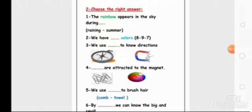Number three: we use what to know directions? A compass. Make a circle on compass. The compass helps us to know four directions. Make a circle on the first picture, the compass.